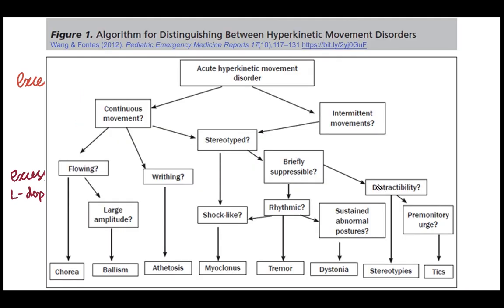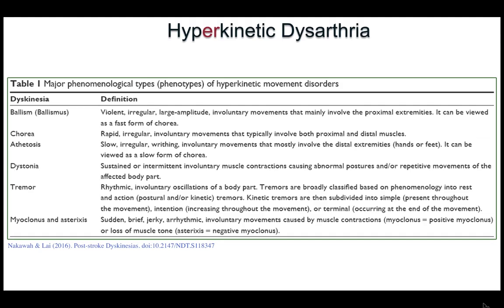There are a number of different categories of movement disorders. Depending on what the movement looks like and the cause, it has a different name, and you start to get to know some of these. There's a table here that gives you basic definitions, but let's have a look at a couple of examples.